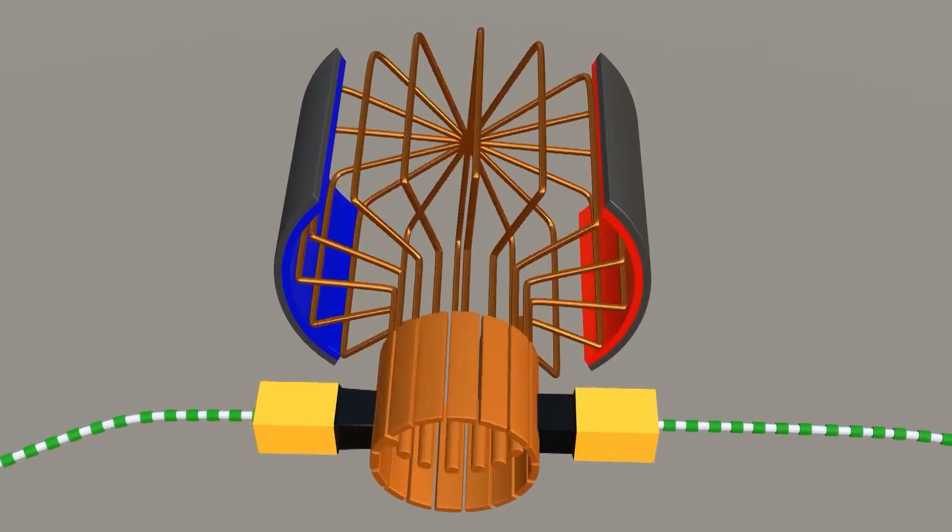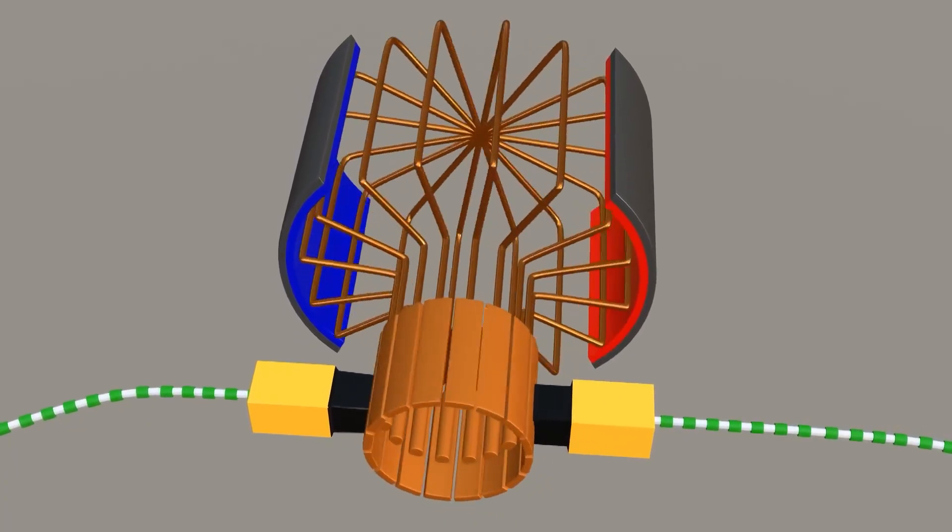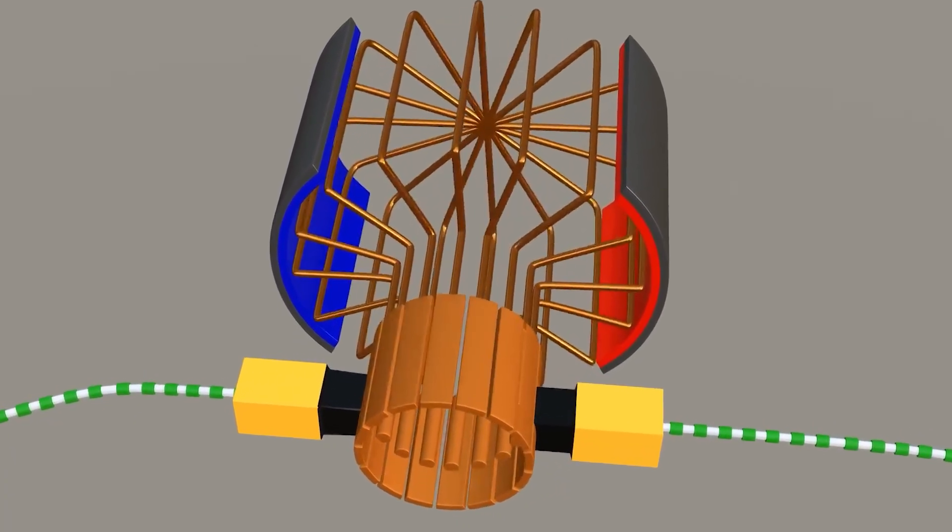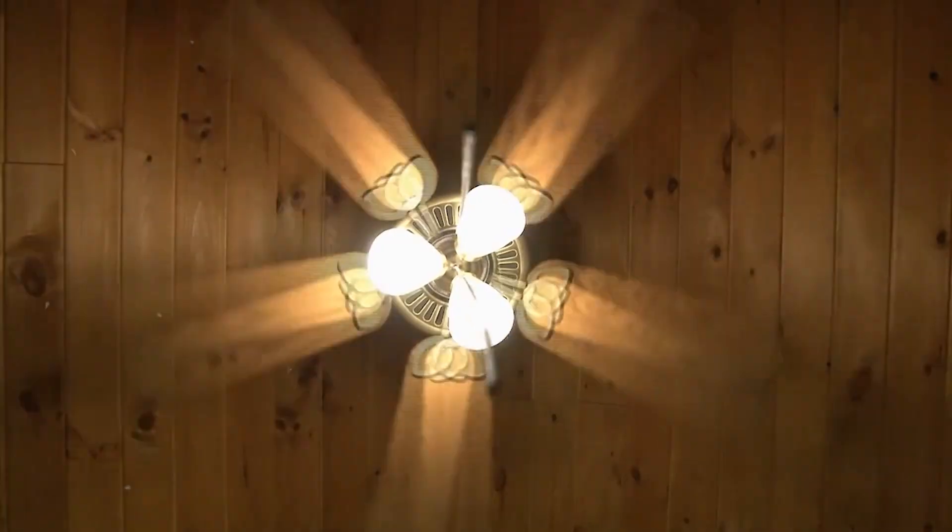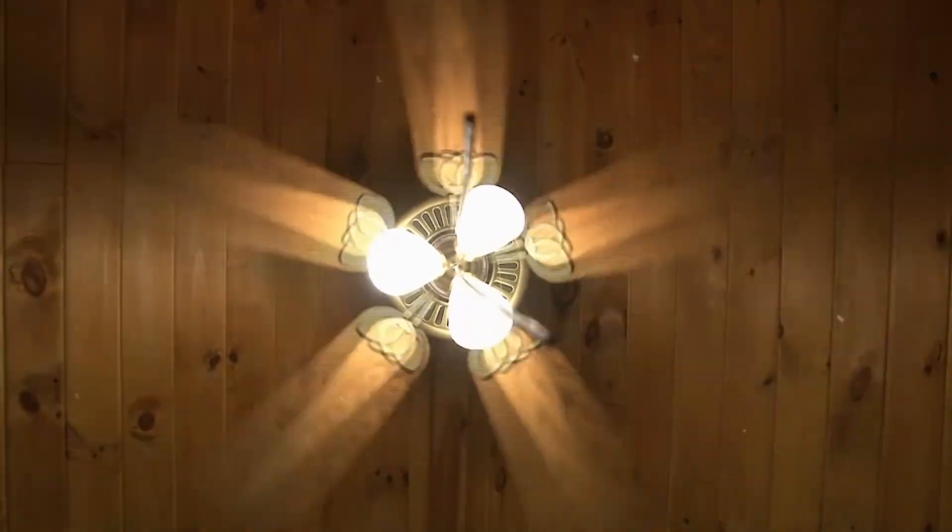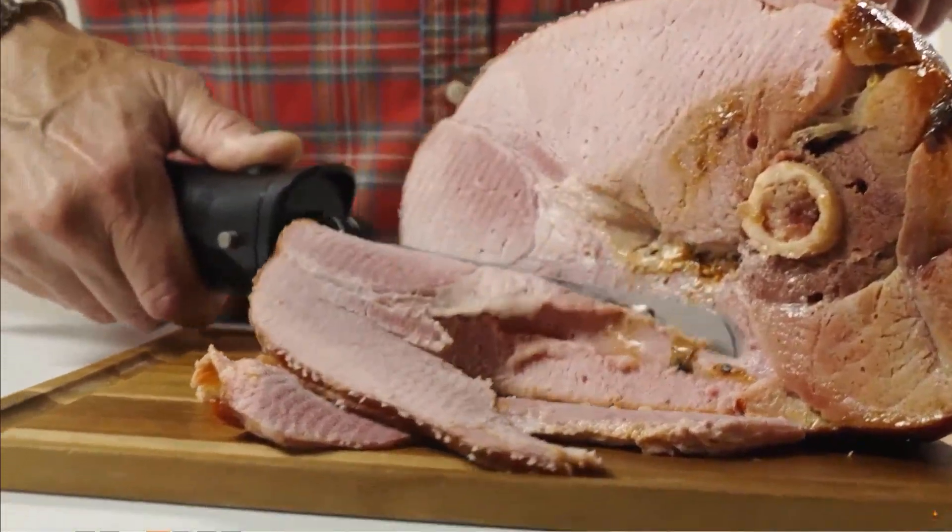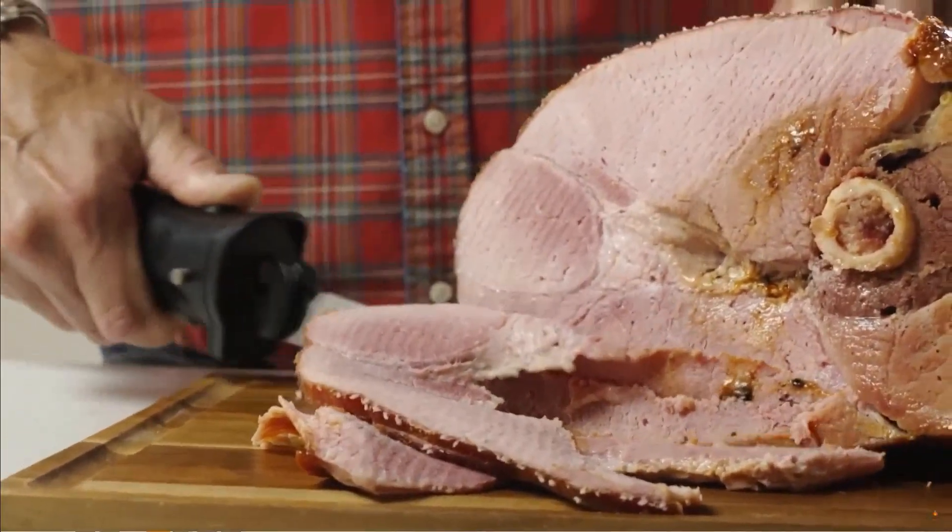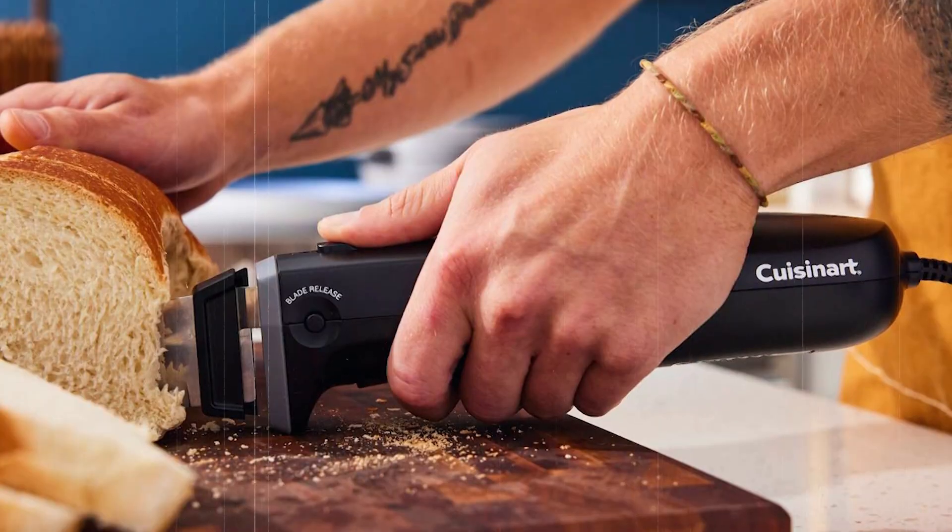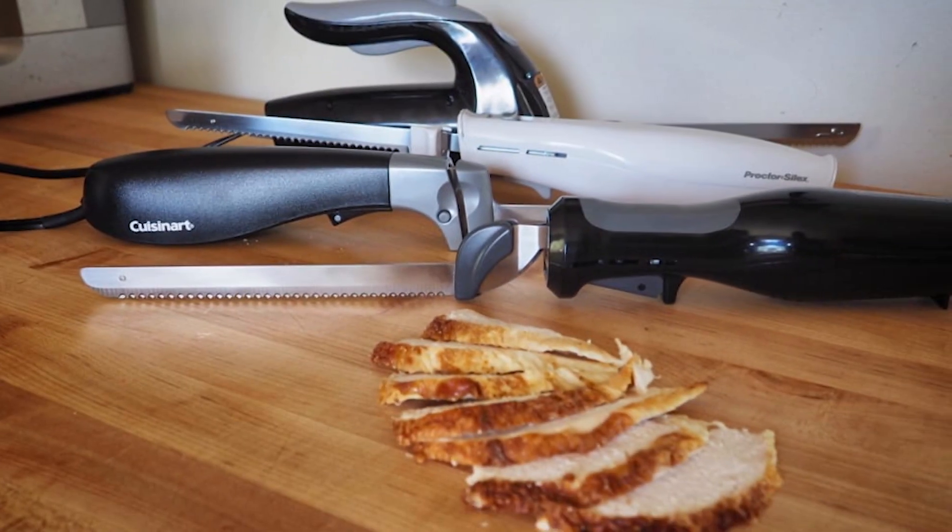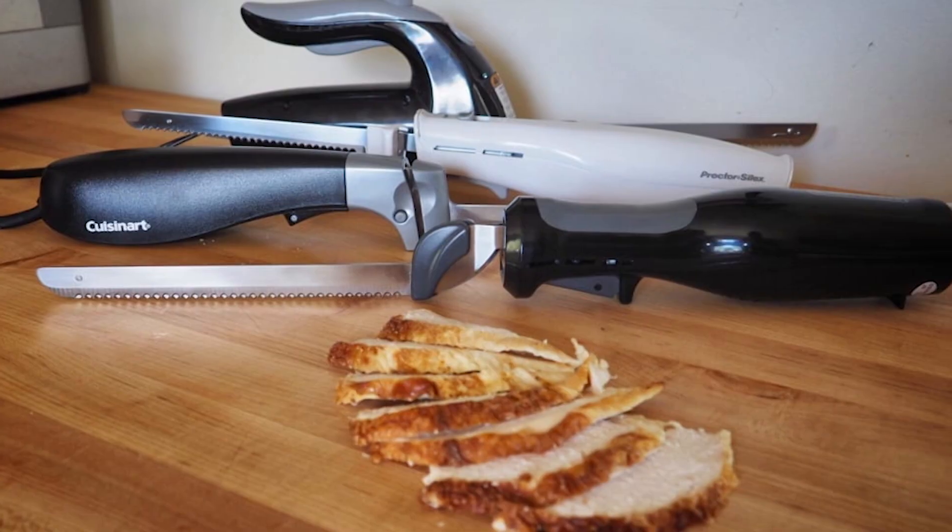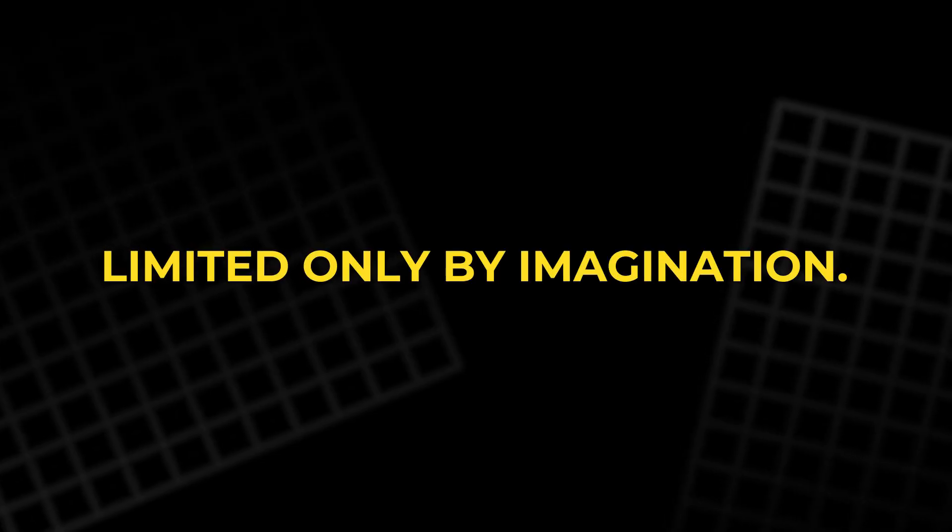Once rotation is achieved, it can be harnessed in countless ways. In toys, the spinning axle turns wheels. In fans, it drives blades to push air and cool a room. In electric knives, gears convert the circular spin into back-and-forth motion, making blades saw rapidly through food. Rotation, once captured, can be transformed into almost any mechanical motion, limited only by imagination.